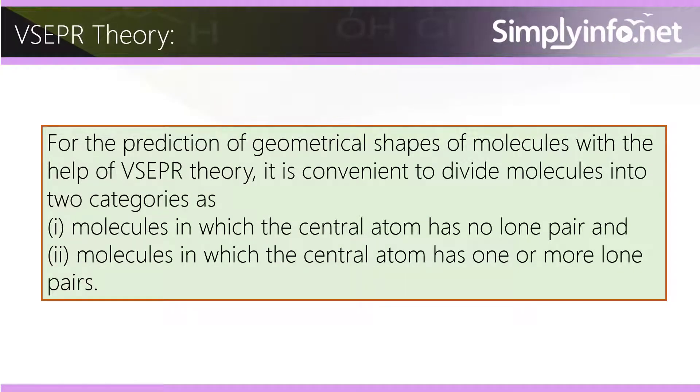For the prediction of geometrical shapes of molecules with the help of VSEPR theory, it is convenient to divide molecules into two categories: molecules in which the central atom has no lone pair, and molecules in which the central atom has one or more lone pairs.